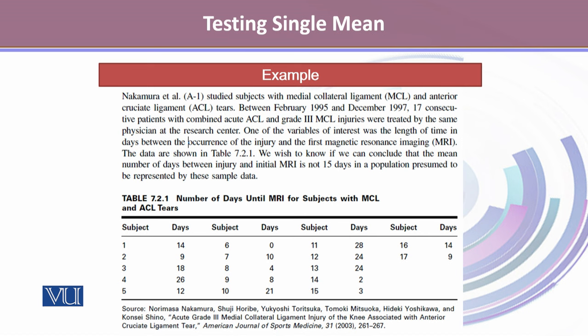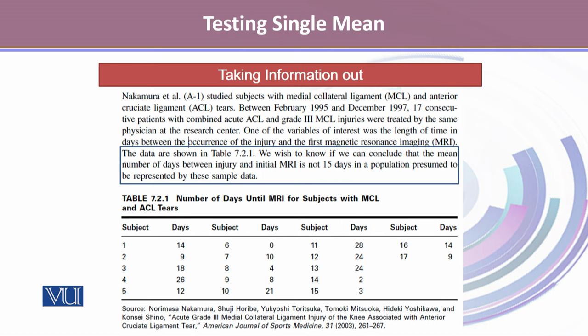Let's take an example using data on the number of days until MRI for subjects with MCL and ACL tears. This data was obtained from Nakamura, who studied subjects with medial collateral ligament and anterior cruciate ligament tears between February 1995 and December 1997. They collected 17 consecutive patients with combined acute ACL and grade 3 MCL injuries treated by the same physician. The variable of interest was the length of time in days between the injury and the first MRI.